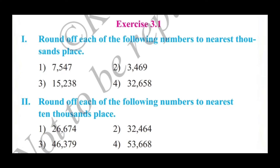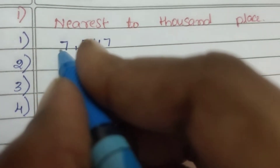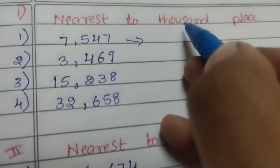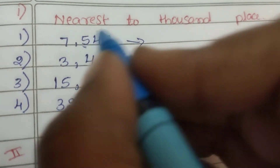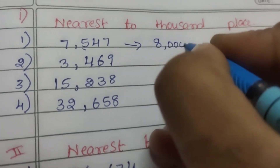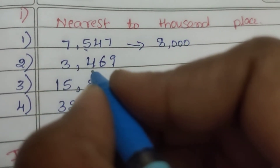Let's see Exercise 3.1. Round off each of the following numbers to the nearest 1000s place. First question: 7,547. Nearest 1,000 is 8,000. The hundreds digit is 5, so we round up. 500 rounds to 1,000.